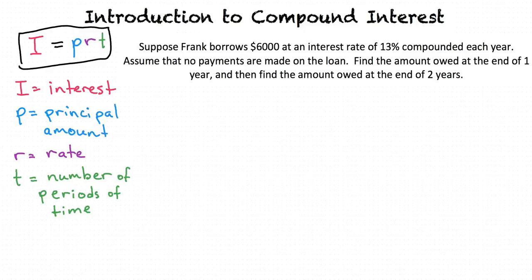Suppose Frank borrows $6,000 at an interest rate of 13% compounded each year. Assume that no payments are made on the loan. Find the amount owed at the end of one year, and then find the amount owed at the end of two years.